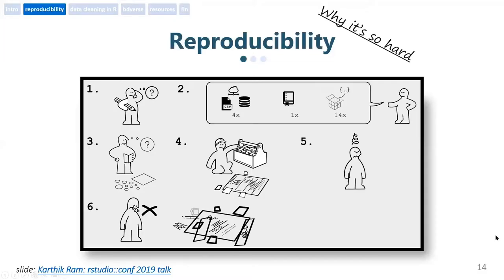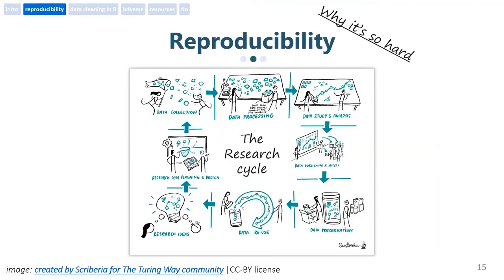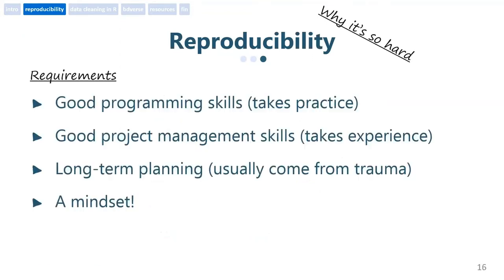But why is reproducibility so hard? Because the entire research cycle is a complex process and reproducibility is a demanding guide. The better your programming skills are, the more options you basically have, and this takes time to practice. Good project management skills are also required, and that takes experience. Long-term planning is usually a factor of trauma.